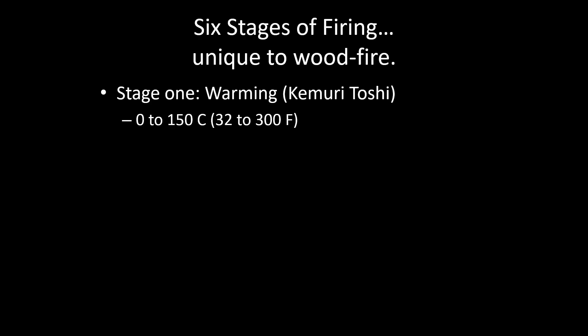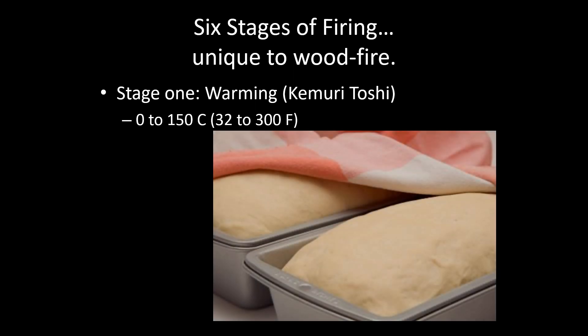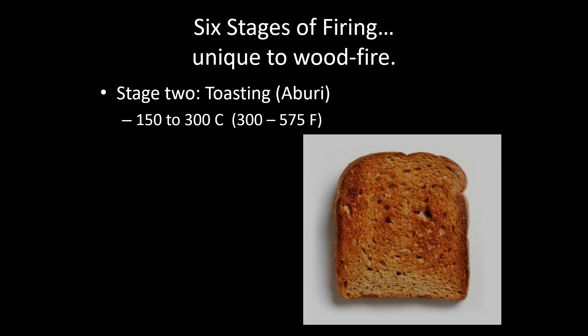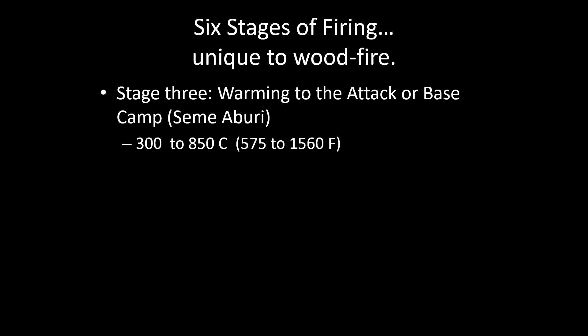There are six stages of firing, and we'll go over this more fully — all of this is very well brought up in the book. The first stage, up to about 300 degrees, we call a warming or kumuritoshi — much like raising bread dough. Then there's the toasting — stage two — which is about 300 to 575 degrees Fahrenheit, aburi. Stage three is warming to the attack or base camp, semi-aburi, getting up to about 1,560 degrees, around bisque temperatures.